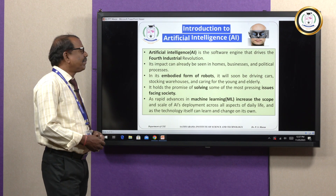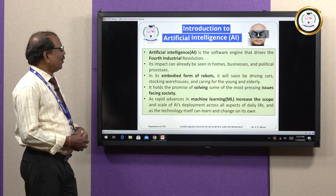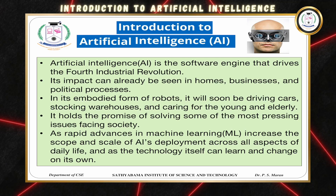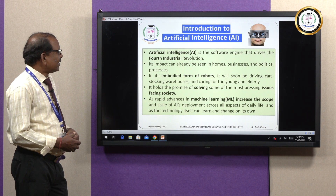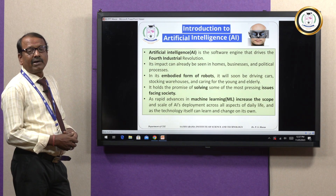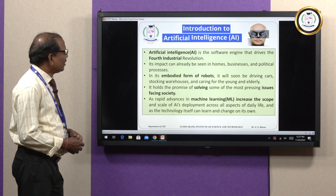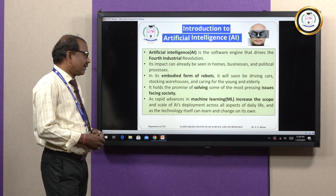AI mostly impacts homes, business and political processes. In its embedded form of robots, it will soon be driving cars, managing warehouses and caring for the young and elderly. It holds the promise of solving some of the most pressing issues facing society. Rapid advances in machine learning increase the scope and scale of AI deployment across all aspects of our daily life.